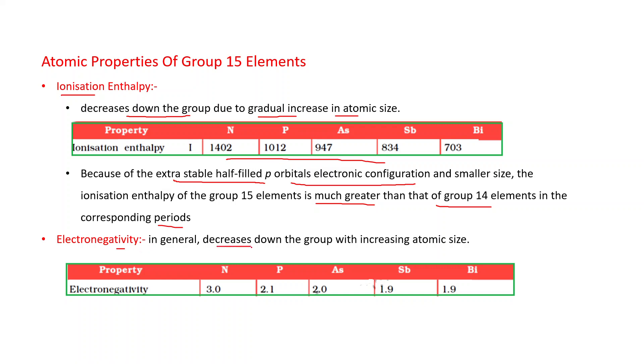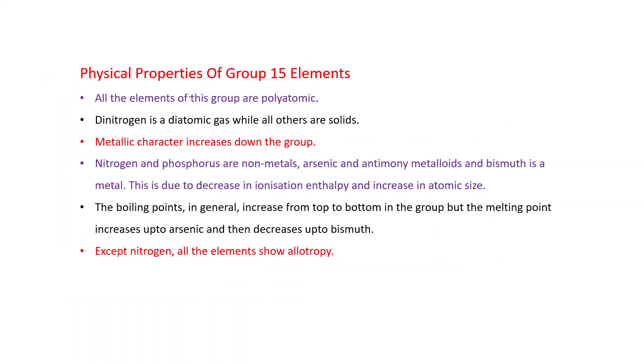Electronegativity in general decreases down the group with increasing atomic size. Physical properties: All the elements of this group are polyatomic. Dinitrogen is a diatomic gas while all others are solids. Metallic character increases down the group. First two members, nitrogen and phosphorus, are non-metals. Arsenic and antimony are metalloids and bismuth is a metal. This is due to decrease in ionization enthalpy and increase in atomic size. The boiling points in general increase from top to bottom in the group, but the melting point increases up to arsenic and then decreases up to bismuth. Except nitrogen, all the elements show allotropy.